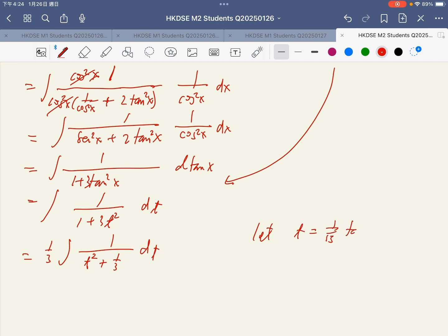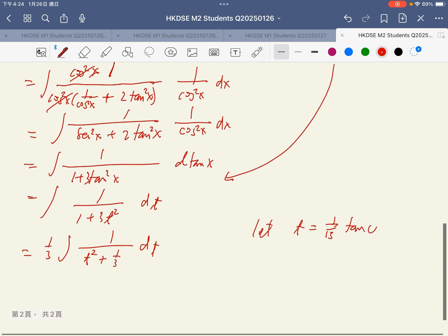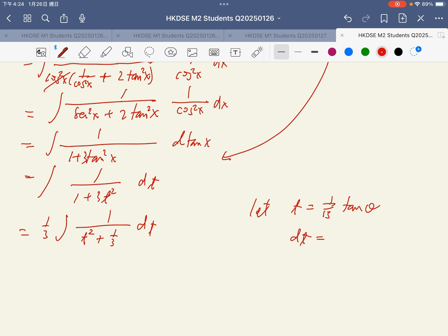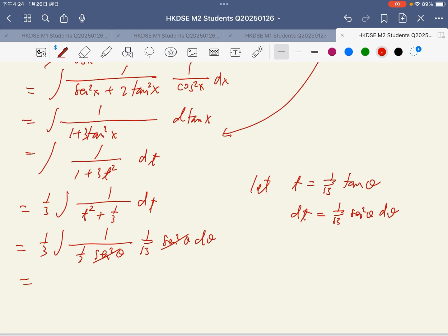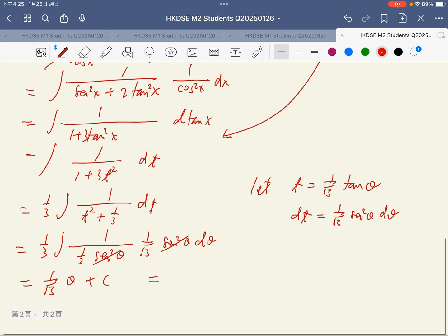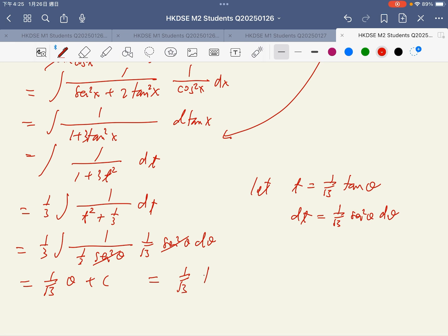t equal to 1 over root 2 tangent theta. dt equal to 1 over root 2 secant square theta d theta. Tangent square plus 1 is secant square theta. Cancel this. And change back to t. This is arctan of root 2 t.